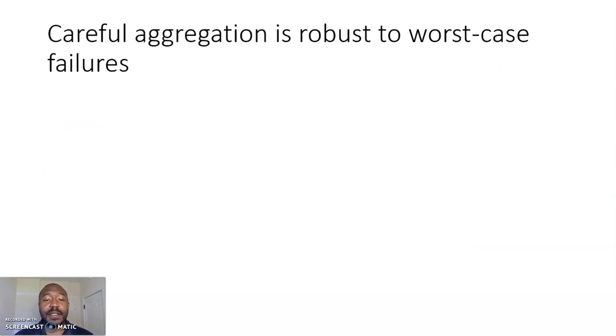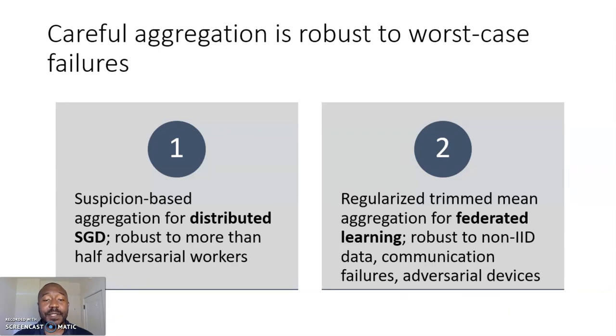So, in summary, I've presented two main results. First, I've shown that suspicion-based aggregation is effective for distributed stochastic gradient descent, and is robust to more than half adversarial, potentially adversarial workers. This improves significantly on known results.